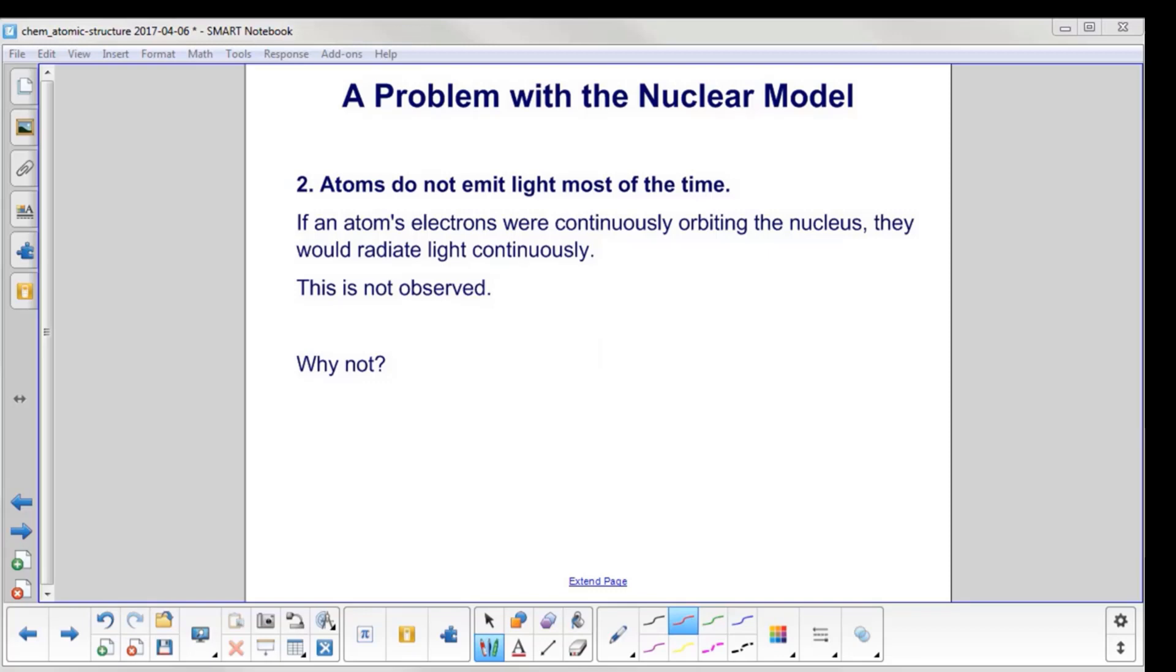Another problem with the model: atoms don't emit light most of the time. However, once again, if they were continuously orbiting the nucleus, they would radiate light continuously. This also is not observed. Why not?